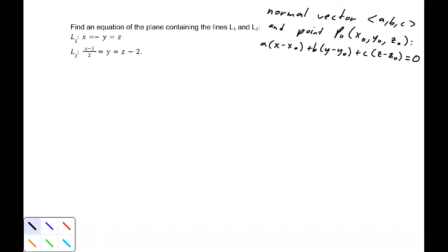First thing I want to do is write each of these in their parametric forms. The first line is x = t, y = -t, and z = t. Pretty straightforward to write in that way.